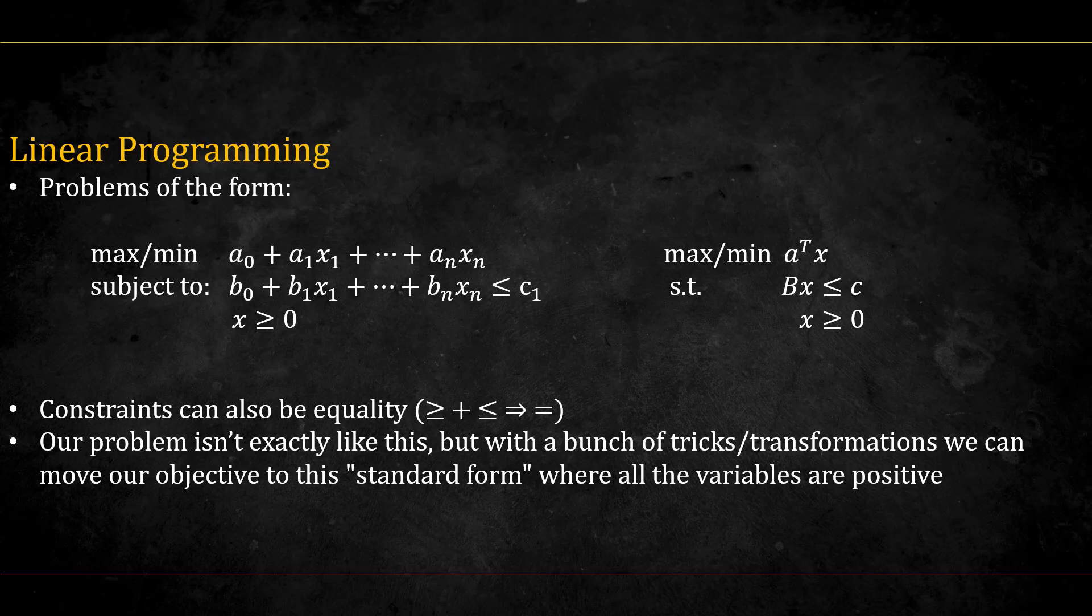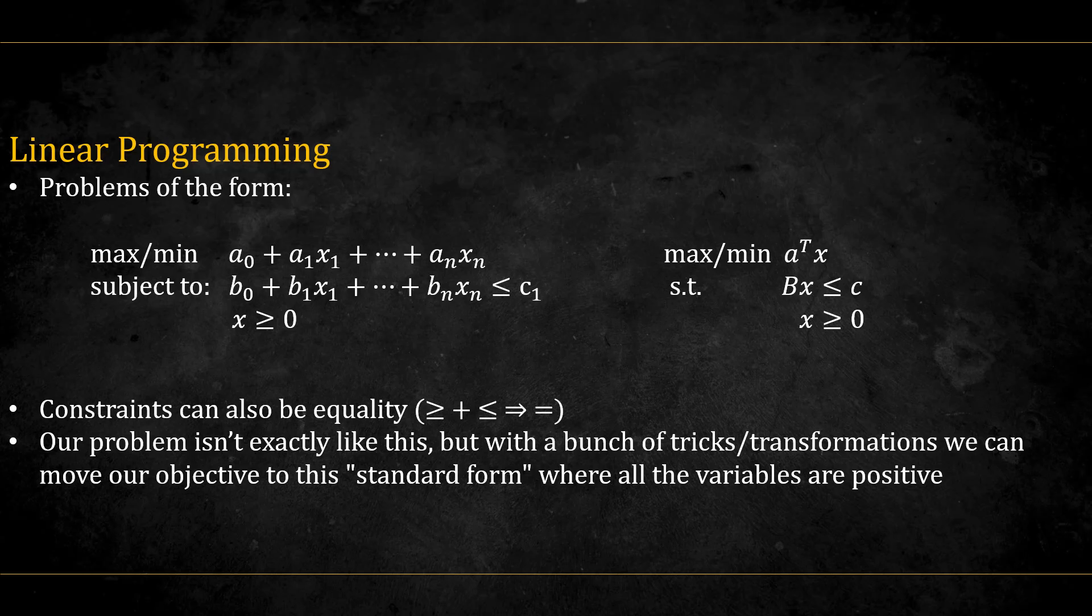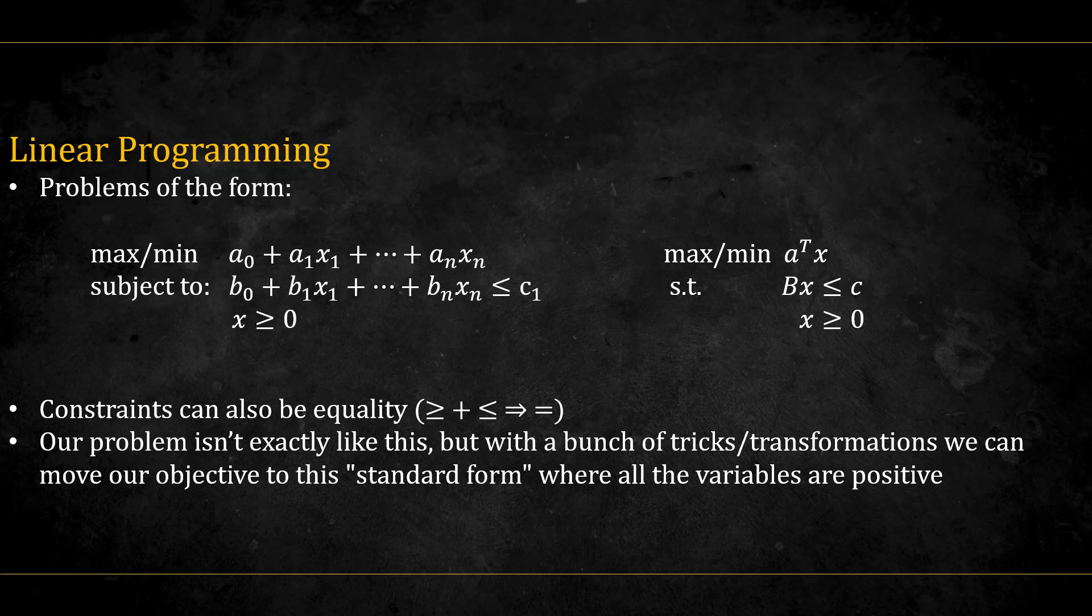Linear programming are problems who have the following form, either in algebraic or matrix notation. We want to optimize some linear function that is restricted by some constraints. The constraints can either be inequality or equality, since we can create equality by using two opposite inequalities together, greater equal and less than equal. Let's see how we can transform our problem to linear programming form.